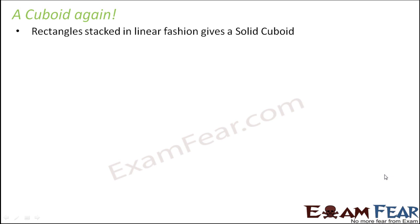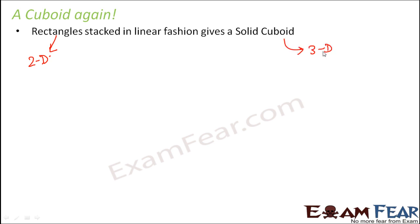Similarly, when you take the example of a cuboid, we see that a cuboid which is three-dimensional is actually formed from two-dimensional rectangles. Rectangles are two-dimensional shapes with length and breadth. A cuboid is a three-dimensional shape with length, breadth and height. Here we will see how many rectangles can form a cuboid.